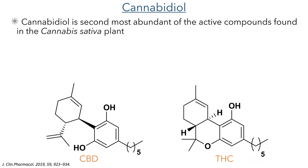Let's start by explaining a little bit about cannabidiol and why it's so interesting to medicinal chemists. Cannabidiol is obtained from the cannabis sativa plant and is the second most abundant of the active compounds, following the closely related THC.